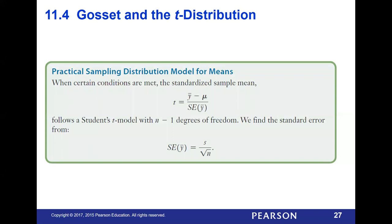We're going to use our T model. Instead of using a Z score, we use a T score, and the calculation looks a lot like the Z score — only instead of using a standard deviation in the denominator, we use our standard error. We take our sample value minus our mean divided by our standard error, where the standard error is the sample standard deviation divided by the square root of N. This follows what's called the student's T model with N minus one degrees of freedom.